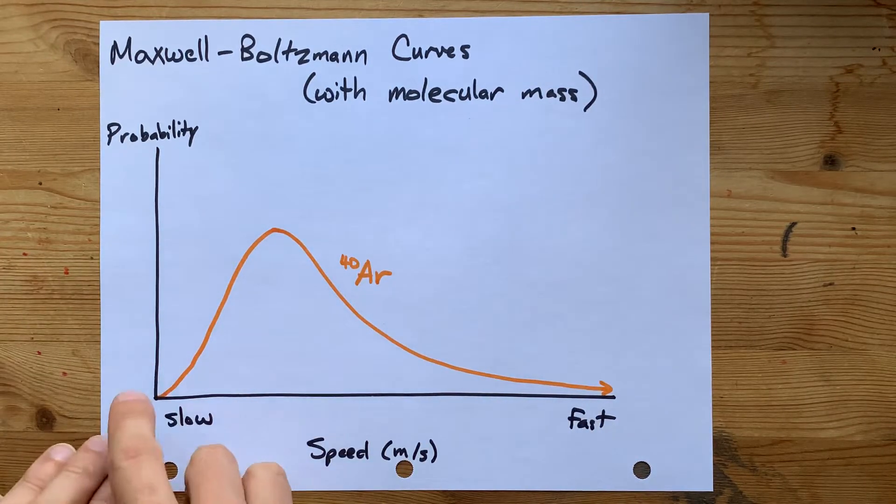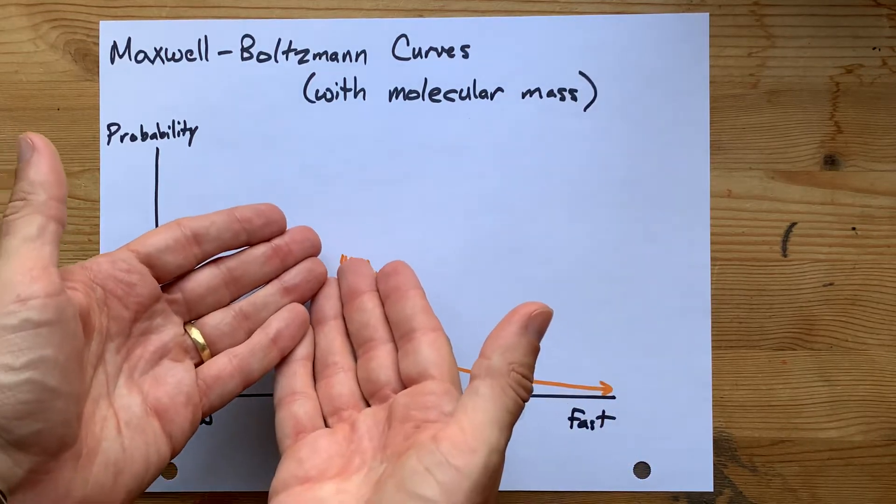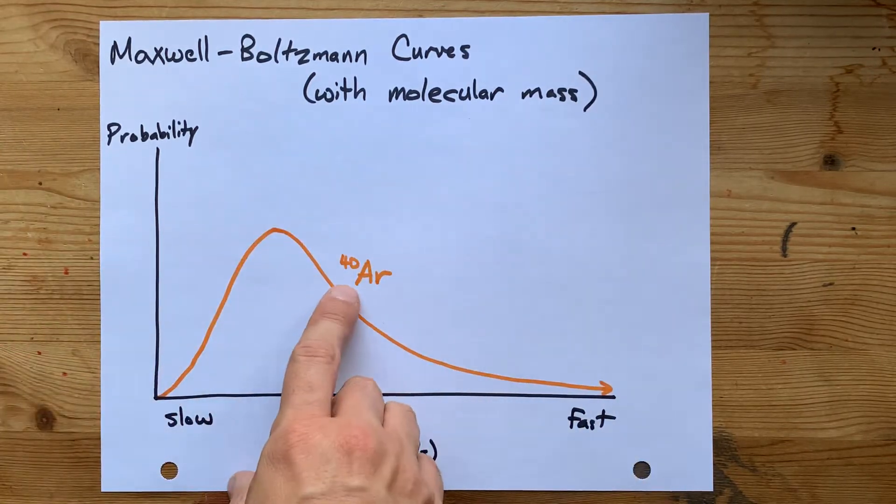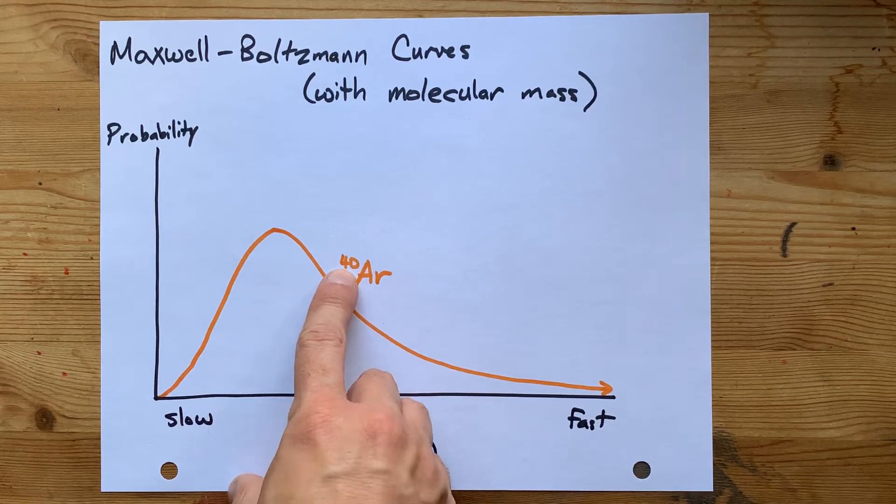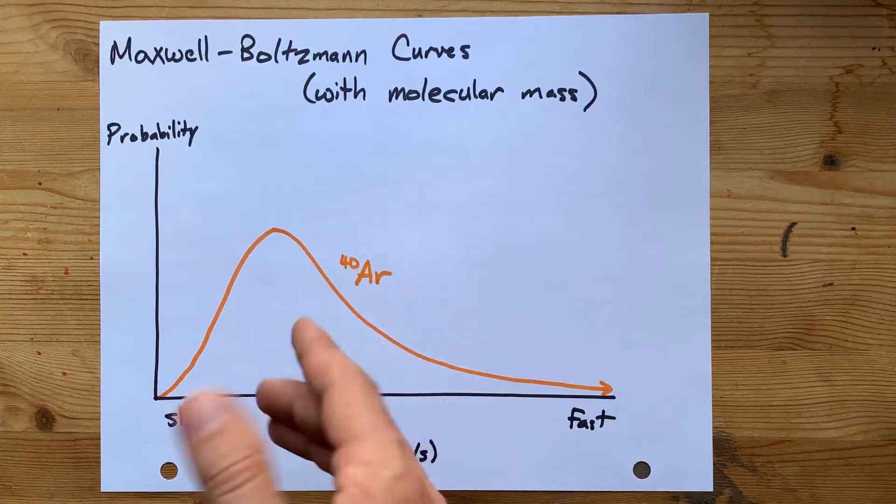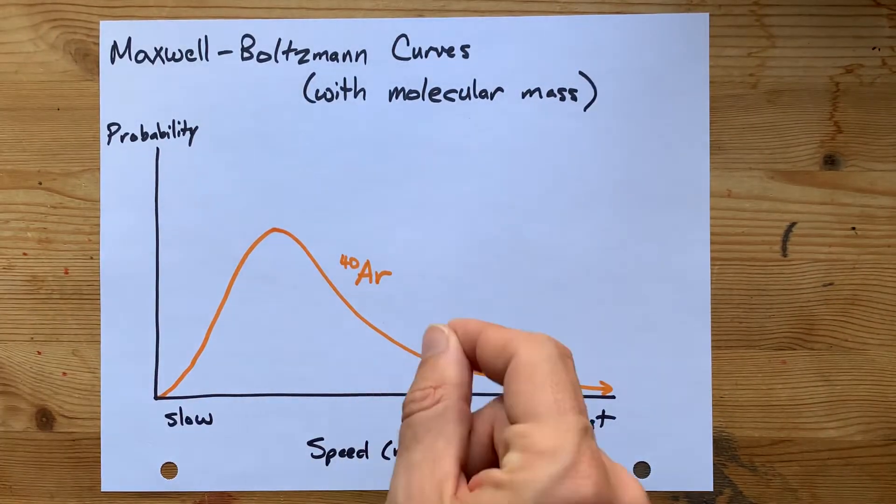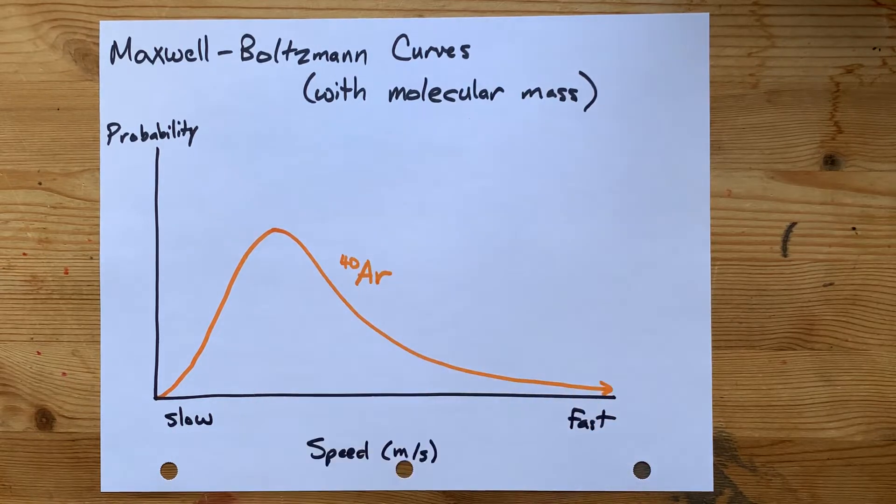I'm going to start with a traditional Maxwell-Boltzmann curve, and I'm going to label it with argon-40, or rather, this is a particle that weighs 40 atomic mass units each, and it's a noble gas, so there's hardly any intermolecular forces that attract these particles to each other. It's ideal, that's what I'm trying to say.